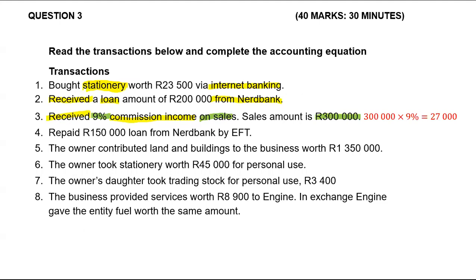Transaction four: we repaid. When we repaid it means money is going out, so bank is decreasing — we are going to credit bank. We are repaying a loan from Nerd Bank by EFT. Bank is decreasing, and the loan is also decreasing. But remember loan falls under liabilities — liabilities increase on the credit side. In this case they are not increasing, they are decreasing because we are owing less, 150,000 less. So we are going to debit loan from Nerd Bank and credit bank, which is our asset, because money is going out.